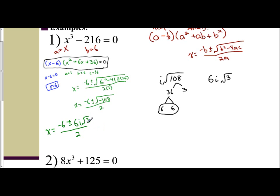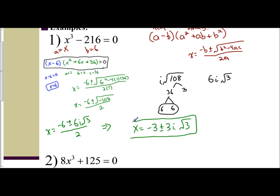Remember, your two terms negative 6 and 6 are both divisible by 2. So I have x equals negative 3 plus or minus 3i square root of 3. Those are my imaginary answers. So we have our real answer x equals 6, and our imaginary answers x equals negative 3 plus or minus 3i square root of 3.